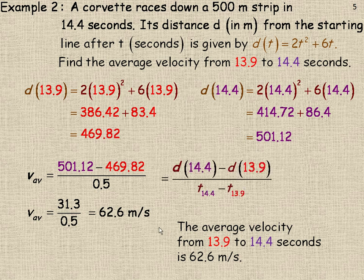One other thing before we finish the lesson. Notice that this calculation leads into some of the introductory ideas of calculus. The 501.12 is the displacement after 14.4 seconds, so I could have called that d(14.4), minus the displacement at 13.9 seconds, that's the 469.82, over the difference in the two times. Notice this is the displacement at the end time minus the displacement at the first time, divided by the difference in the two times. That's a formula you will see later in an introductory calculus course.